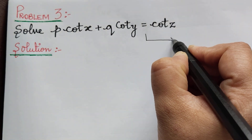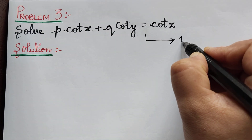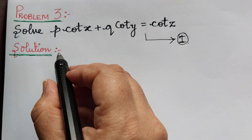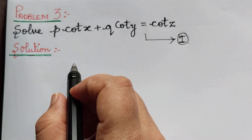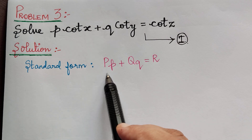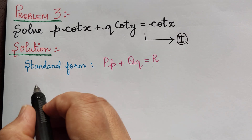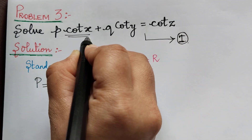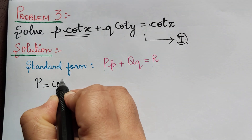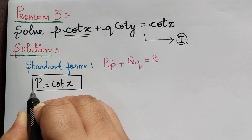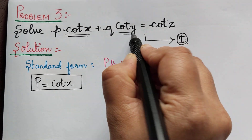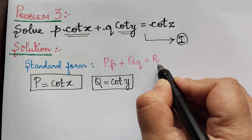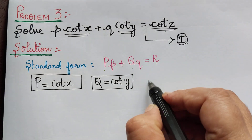As the first step, let us mark the given problem as equation 1 and compare it with the standard form of Lagrange's type of equation. We get the value of P equal to cot x, the value of Q equal to cot y, and the value of R equal to cot z.